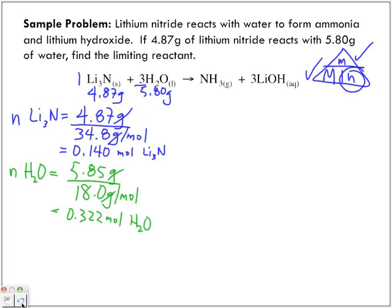So this is the ratio — we have 0.140 moles of lithium nitride to 0.322 moles of water. Now using that information, we can go into our stoichiometric chart. Let's put up our table.